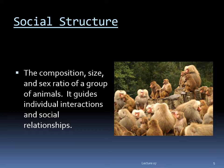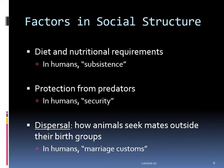In studying the behaviors of primates, we start with describing the basic outlines of their lives. One of the characteristics of primates in general is their tendency to be social animals — to live in groups with other members of the same species. This is called social structure: the composition, size, and sex ratio of a group of animals. Social structure guides individual interactions and social relationships. Factors influencing social structure include diet and nutritional requirements, protection from predators, and dispersal — how animals seek mates outside their birth groups. The same factors affect human social structures, where we call them subsistence, security, and marriage customs.